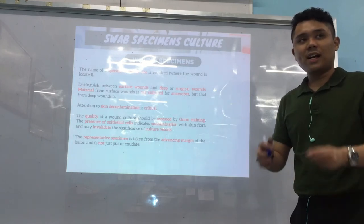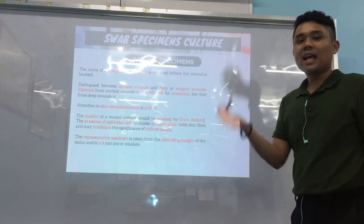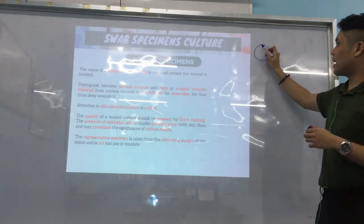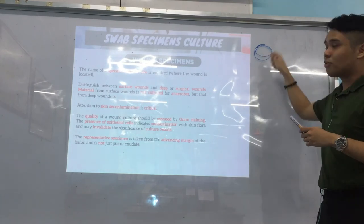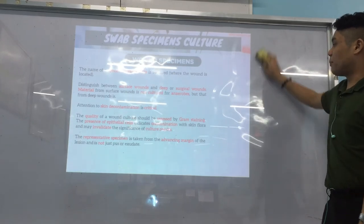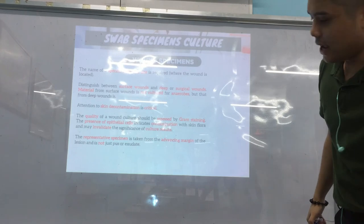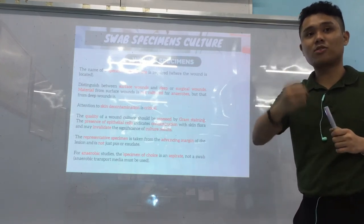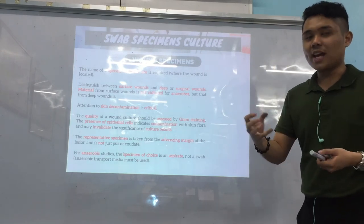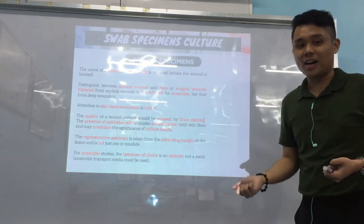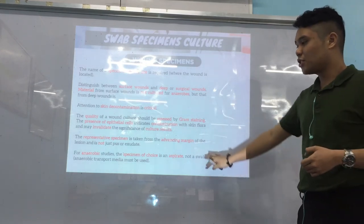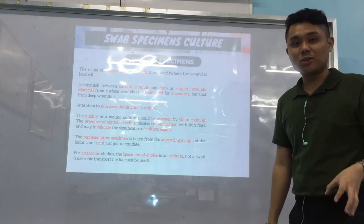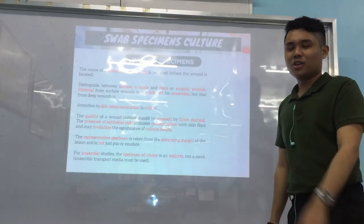For a representative wound specimen, swab the advancing margin of the lesion — the inner edge — not just the surface pus or exudate, as that is not representative of the lesion. For anaerobic studies, the specimen of choice is an aspirate using a syringe to aspirate the contents of the abscess; do not use a swab. Transport must be in an anaerobic transport medium. A separate lecture on anaerobic culture will be covered later.